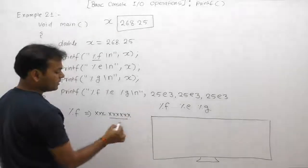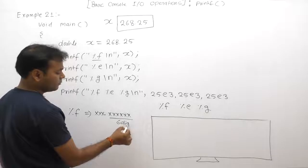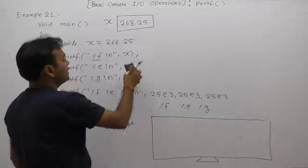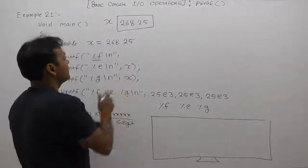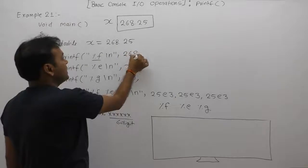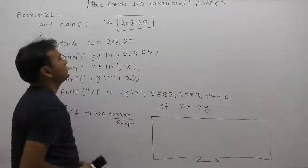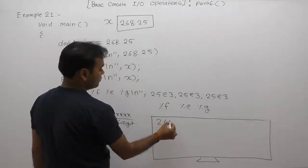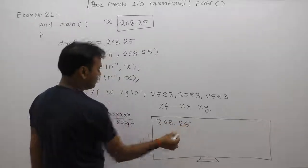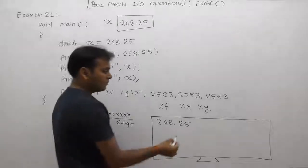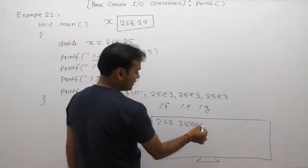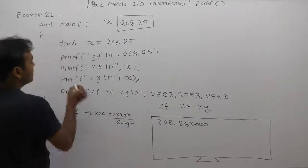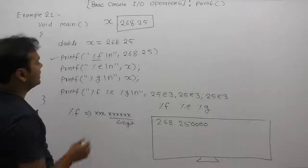Default precision for %f is six decimal digits. So when we supply x = 268.25, the number is printed as 268.250000 — four extra trailing zeros are padded to make up the six decimal places. This is the first output from the first printf statement.